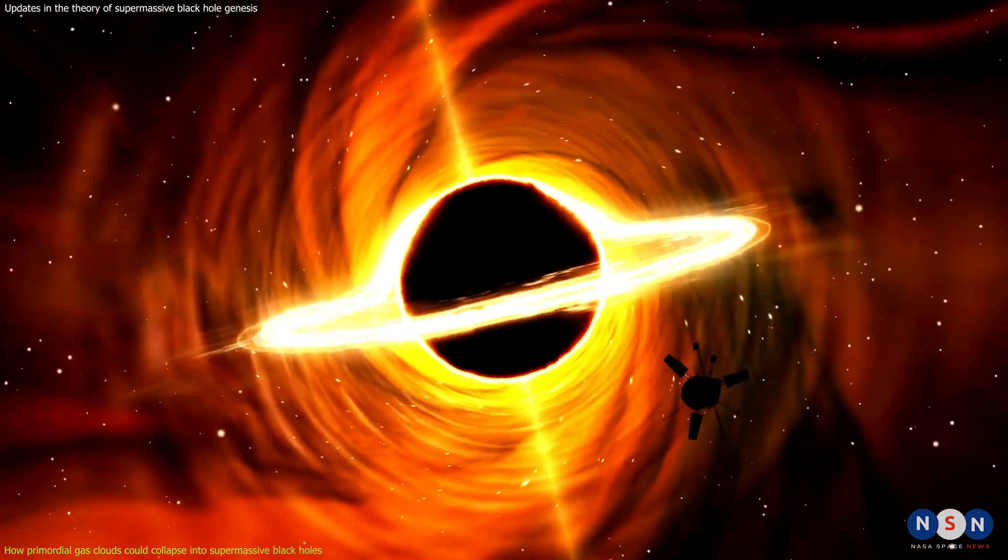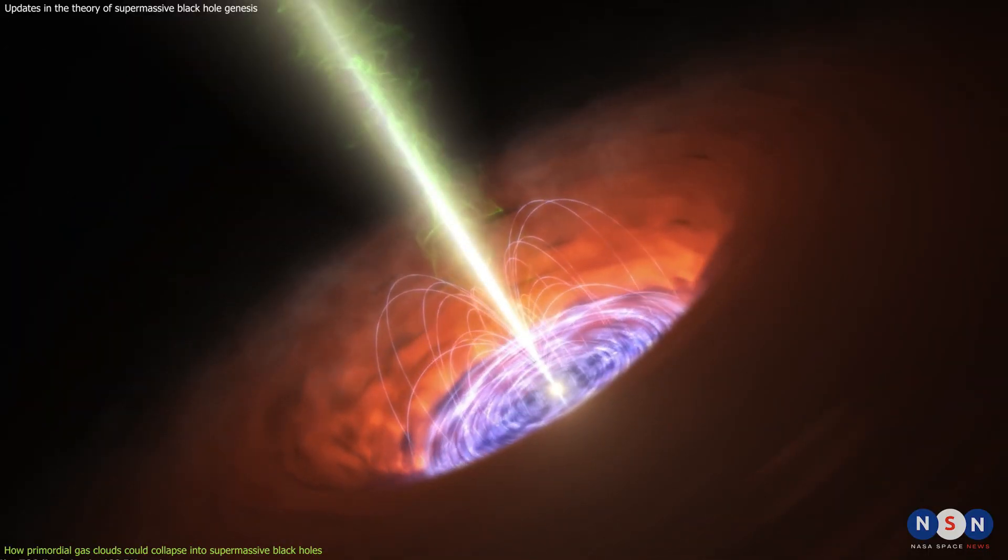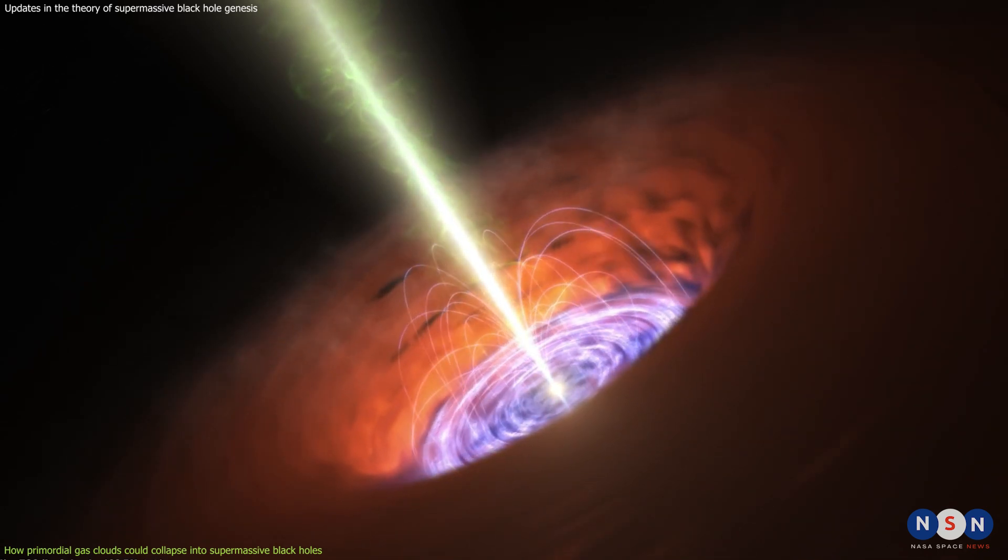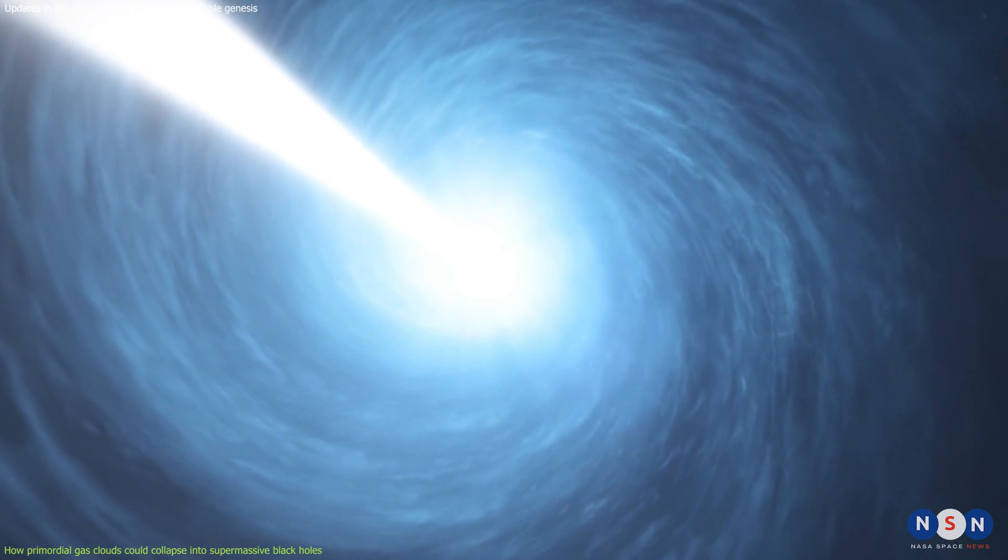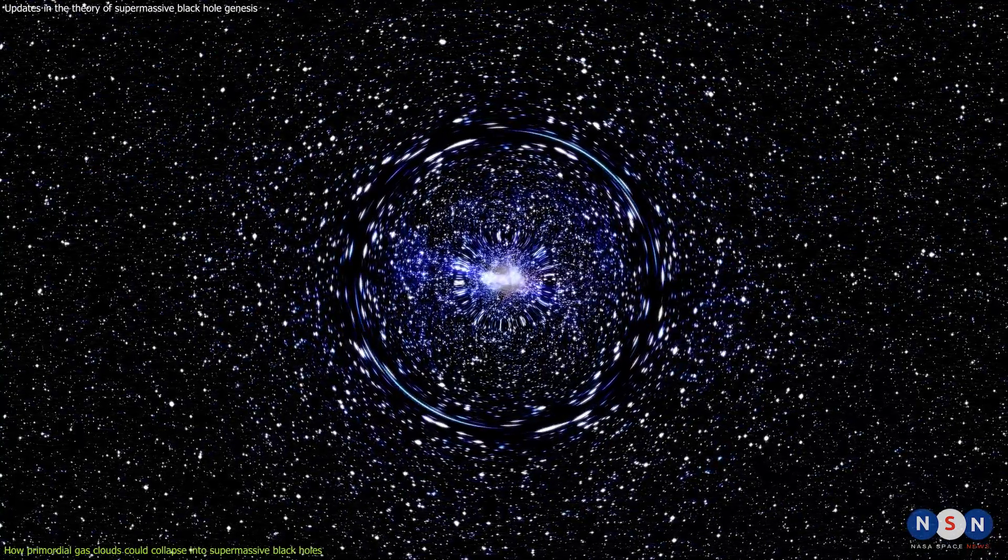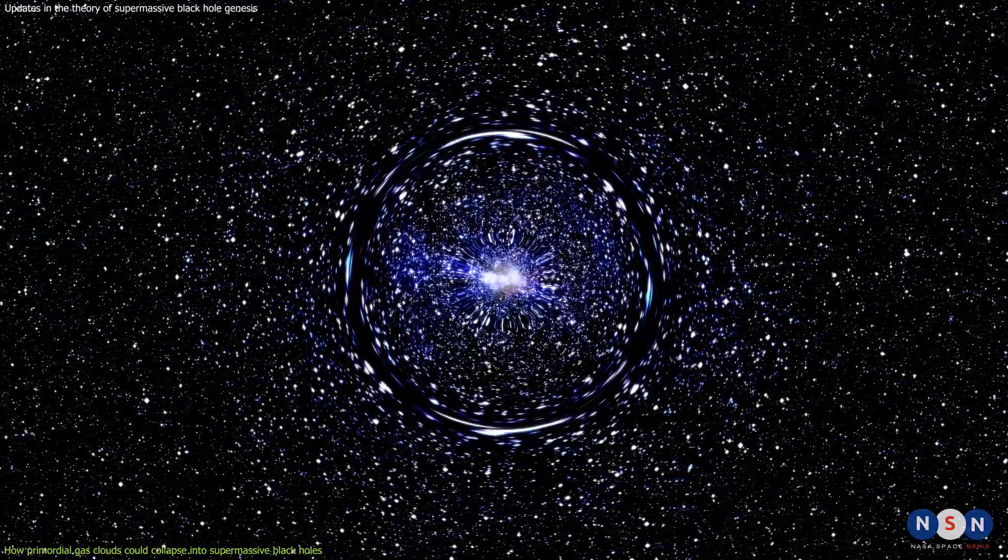The study also showed that this mechanism could produce supermassive black holes with a range of masses and spins depending on the initial conditions of the gas clouds. The spins of the black holes are important because they affect how fast they can accrete matter and grow.